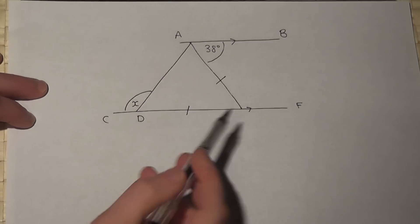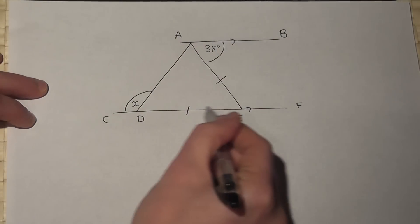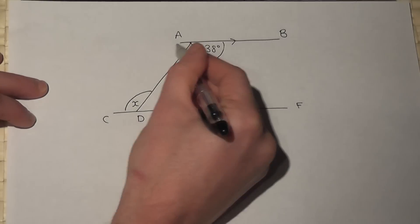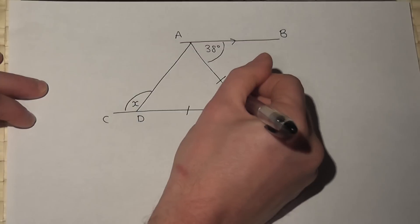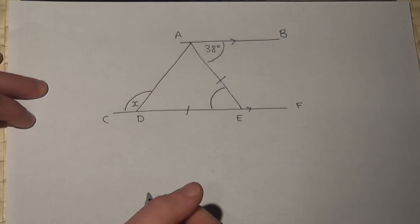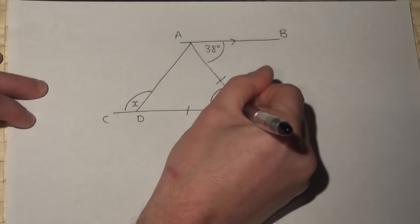The first thing I observe is that this here is a Z and these two lines are parallel. So I know this angle here. It's a Z so it must be 38 degrees.